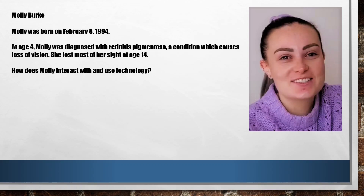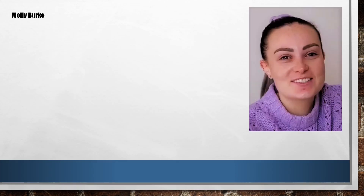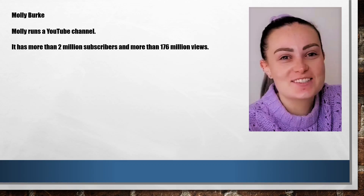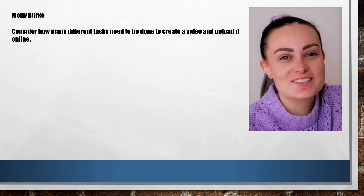Now that you've collected some thoughts, let's see what Molly herself has to say. Molly is quite well known — she runs a YouTube channel with more than 2 million subscribers and more than 176 million views. So how does someone who's visually impaired produce content for YouTube? There are lots of different steps. The first phase is preparation: deciding what the content is, identifying and accessing resources or doing research, and generating a plan or some basic materials — and that's before you even begin filming.